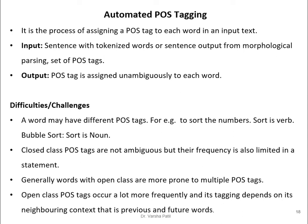The problem is not simple because most words under the open class face issues of ambiguity. A word may have different POS tags — for example, in 'sort the number', 'sort' is a verb; but in 'bubble sort', 'sort' is a noun. Closed-class POS tags are not ambiguous — they are fixed and used for connecting words with limited frequency. Words with open-class POS tags are more prone to multiple taggings.